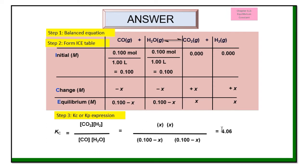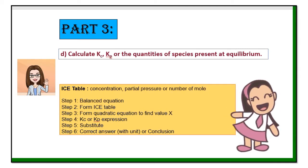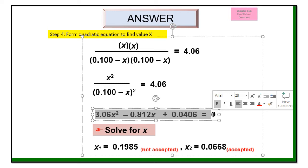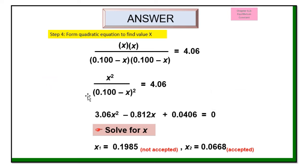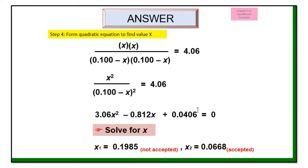From here, we need to form the quadratic equation to find the value of x. At this point, it's no longer about chemistry — it's all mathematics, so make sure you form the correct quadratic equation. Press the calculator to find the value of x. You'll get two values: x equals 0.1985 and x equals 0.0668. There are two values, so we have to choose one.